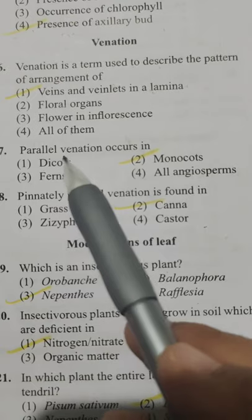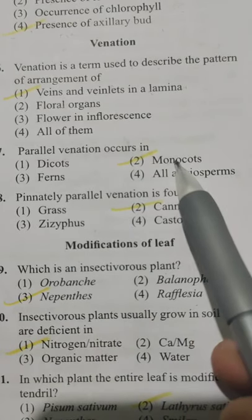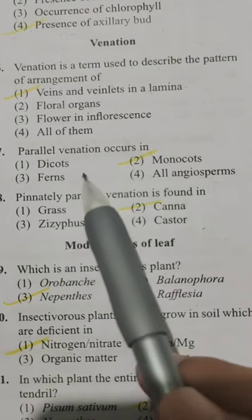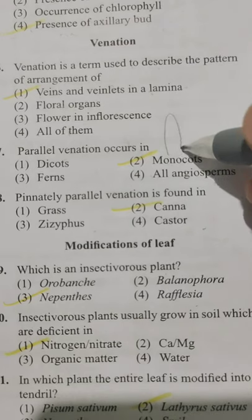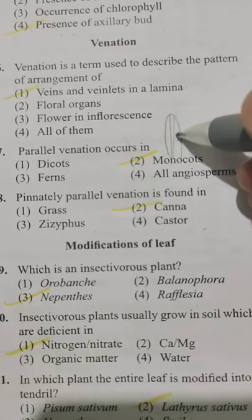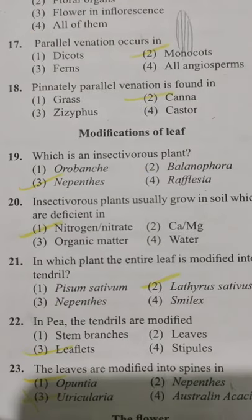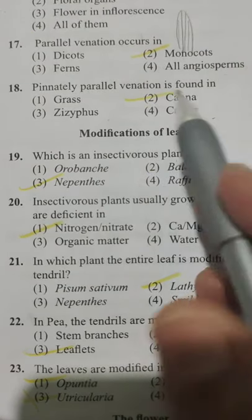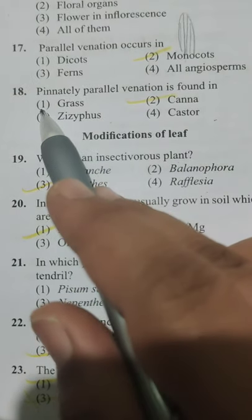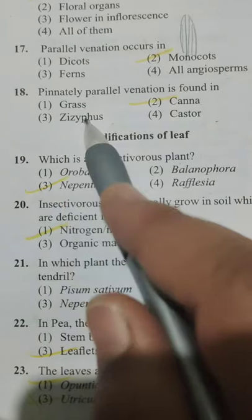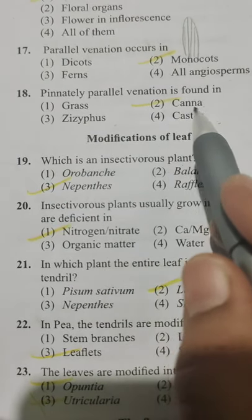Parallel venation occurs in — Option 1 dicots, Option 2 monocots, Option 3 ferns, Option 4 all angiosperms. It is usually found in monocots, where the midrib and veins run parallel to each other — Option 2. Next: pinnately parallel venation is found in — Option 1 grass, Option 2 Canna, Option 3 Ziziphus, Option 4 castor. It is found in Canna — Option 2.